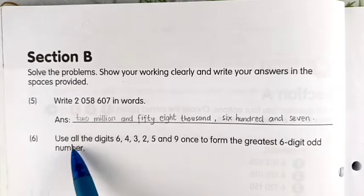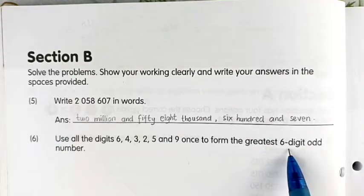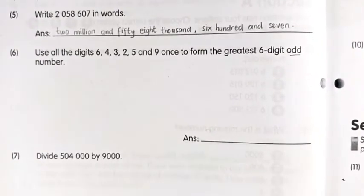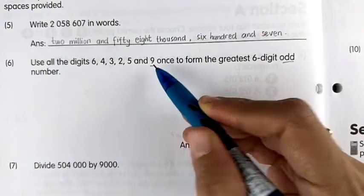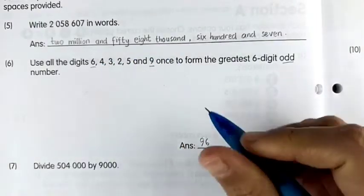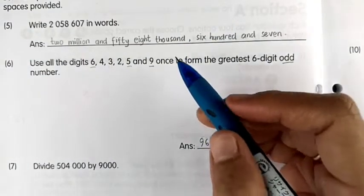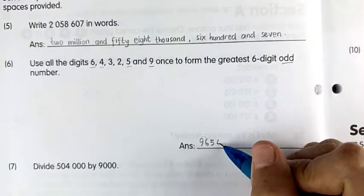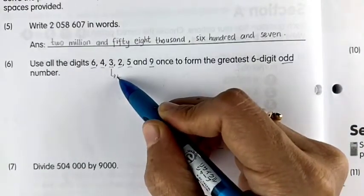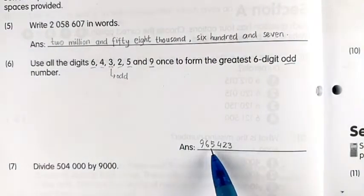Number six: use all the digits 6, 4, 3, 2, 5, and 9 once to form the greatest 6-digit number. We write the greatest digit first: 9, then 6, then 5, then 4, then 3, leaving 2 last. So the answer is 965,432.